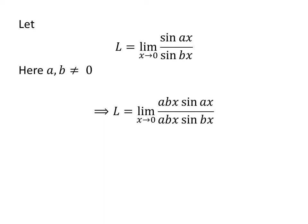As multiplying the numerator and the denominator of a fraction by a common factor does not change the value of the fraction, let us multiply the above fraction by the common factor a times b times x. So l is equal to the limit of a times b times x times sin of a times x upon a times b times x times sin of b times x as x approaches 0.